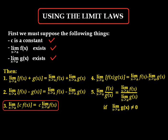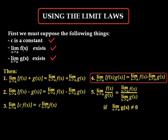Three: the limit as x approaches a of a constant times the function f of x is equal to the constant times the limit of the function. Four: the limit as x approaches a of the multiple of f of x and g of x is equal to the multiple of the limits of f of x and g of x.